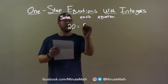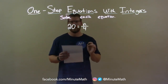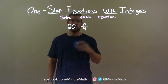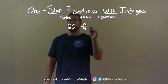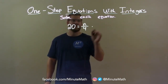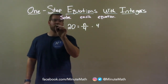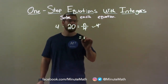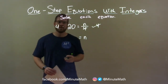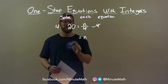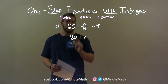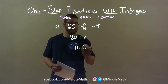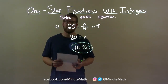20 equals n over 4. First thing I want to do is get n by itself. It's being divided by 4, so I need to get rid of the 4. Opposite of division is multiplication. So I'm multiplying both sides by 4. This cancels out the 4 on the right, giving me n by itself. But now I have 4 times 20 on the left — 4 times 20 is 80. So n equals 80 is my final answer.